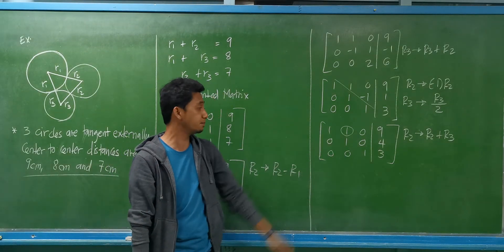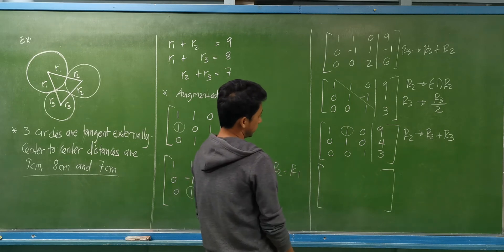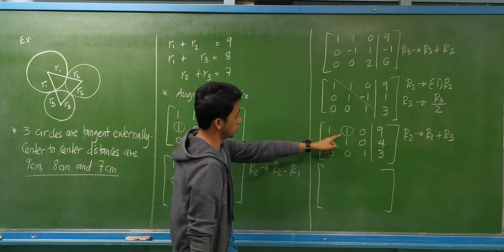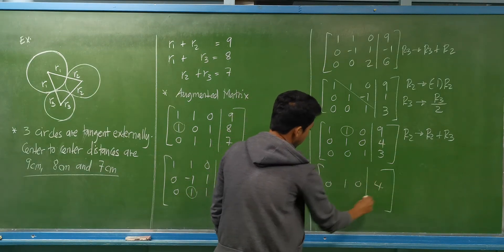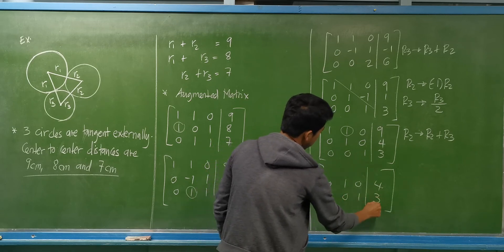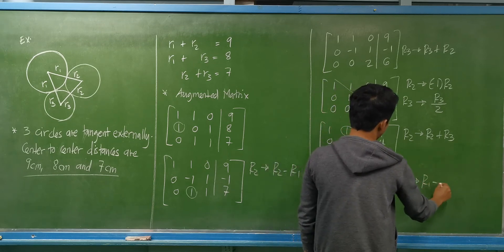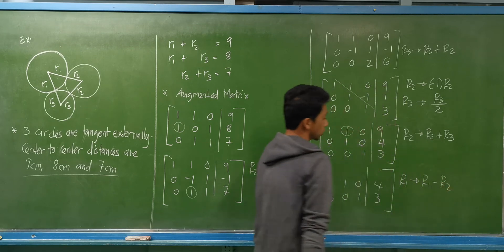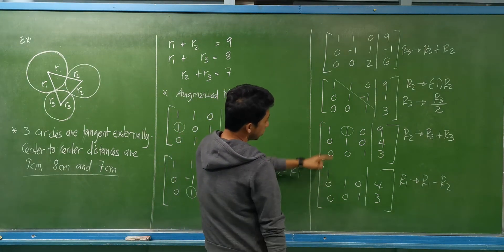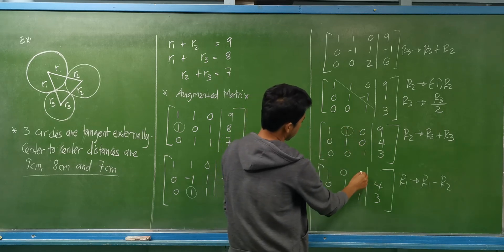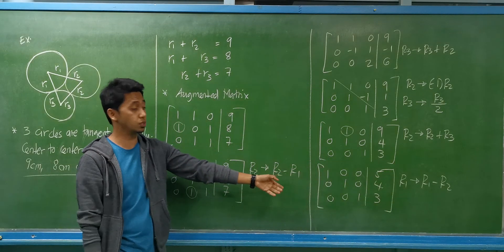To eliminate the 1 in row 1, column 2, row 2 remains: 0, 1, 0, 4. Row 3 remains: 0, 0, 1, 3. Row 1 becomes row 1 minus row 2: 1 minus 0 is 1; 1 minus 1 is 0; 0 minus 0 is 0; and 9 minus 4 is 5. This completes the Gauss-Jordan elimination.